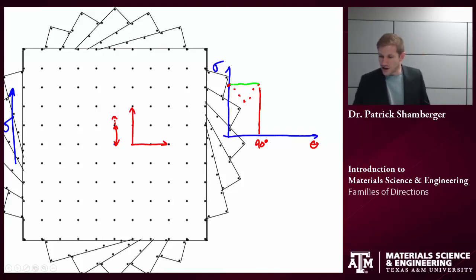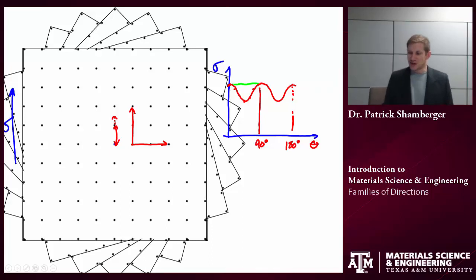So if I kept doing this, if I kept rotating, I would see this same pattern repeated. So this would be 180 degrees. And it would keep repeating. And in this case, that's because I have this four-fold symmetry. Every time I rotate it 90 degrees, it looks exactly the same. So that's what a direction, a family of directions is.